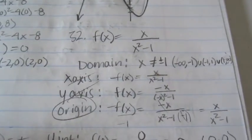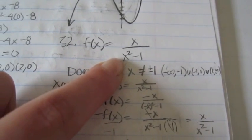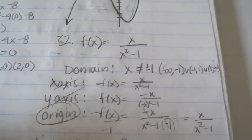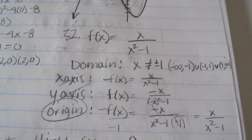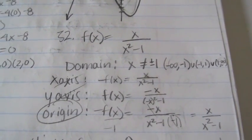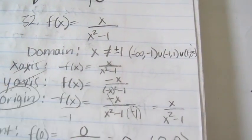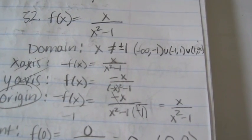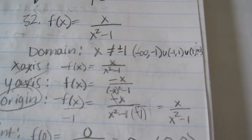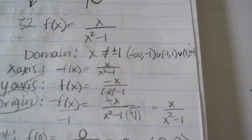Starting with the original function, the domain is found by setting the denominator equal to zero, giving x = ±1. So the domain, using interval notation, is (−∞, −1) ∪ (−1, 1) ∪ (1, ∞).